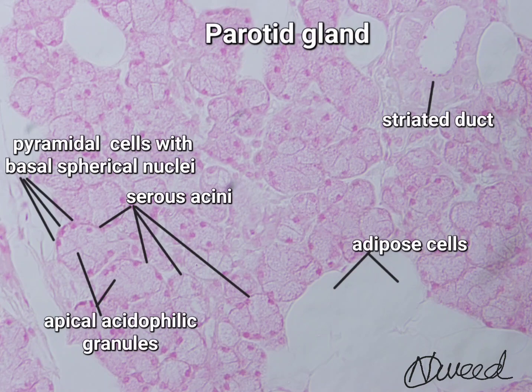The salivary ducts are classified into three types: 1. Intercalated duct, 2. Striated duct, 3. Excretory duct.